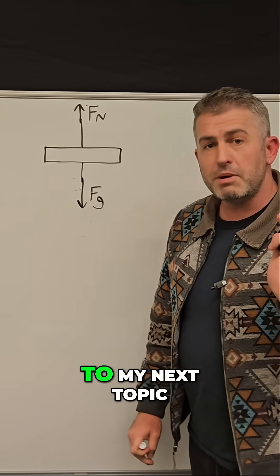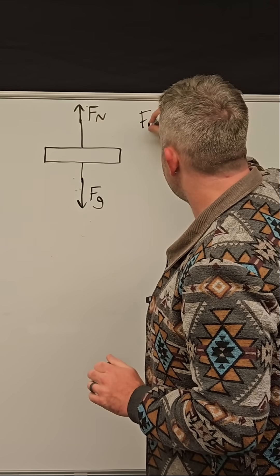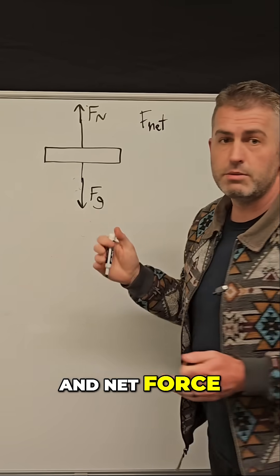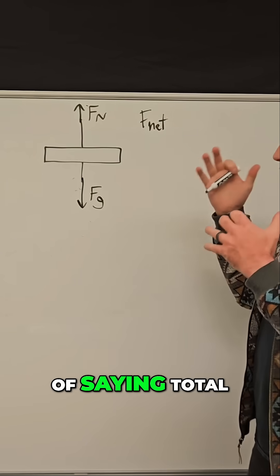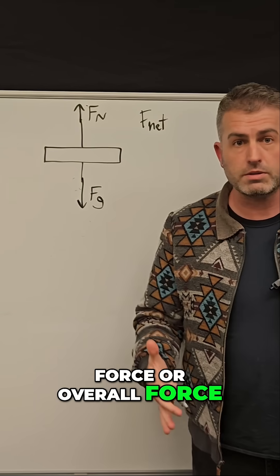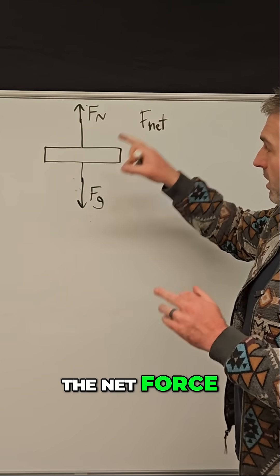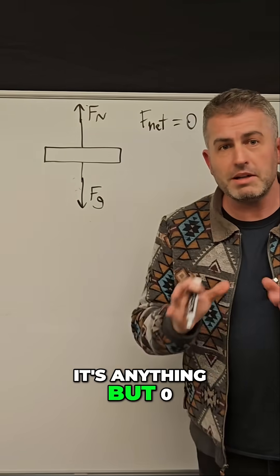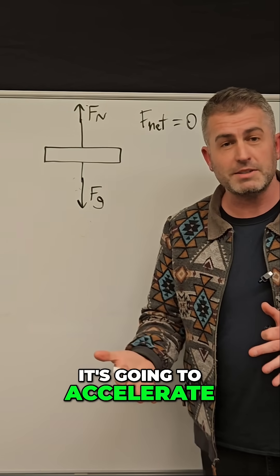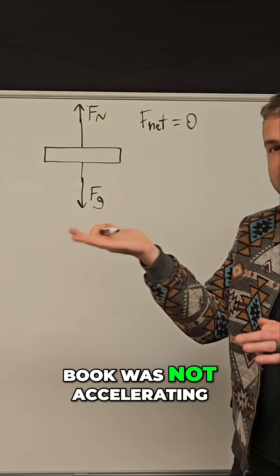And that brings us to my next topic, which is something called net force. Net force, which is shown as F sub net, is a way of saying total force or overall force. So the net force on this book has to be equal to zero because if it's anything but zero, it's going to accelerate. But we know this book was not accelerating.